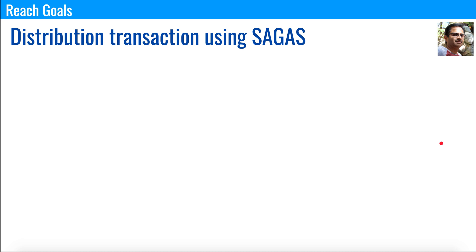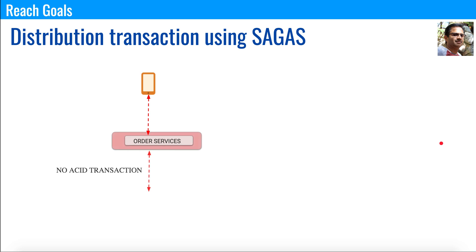Let's say you have a client that connects to an order service, and the order service connects to a database where all orders are maintained. A user places an order — it goes into the order service and gets created in the database. We maintain a state in the table which we call "created".